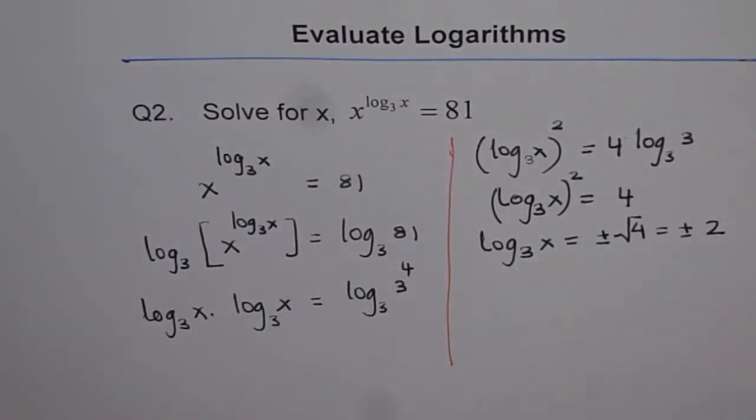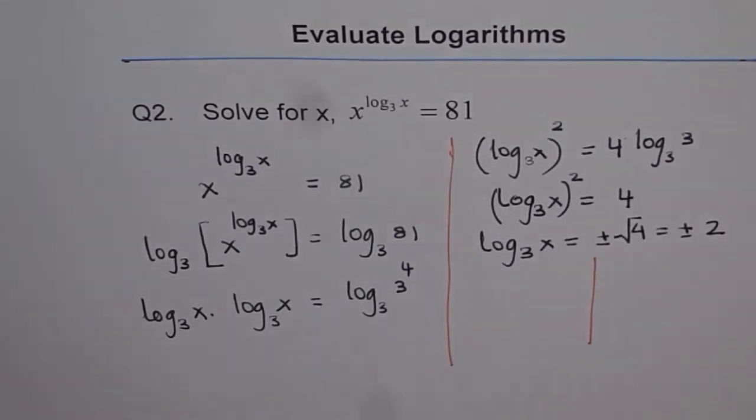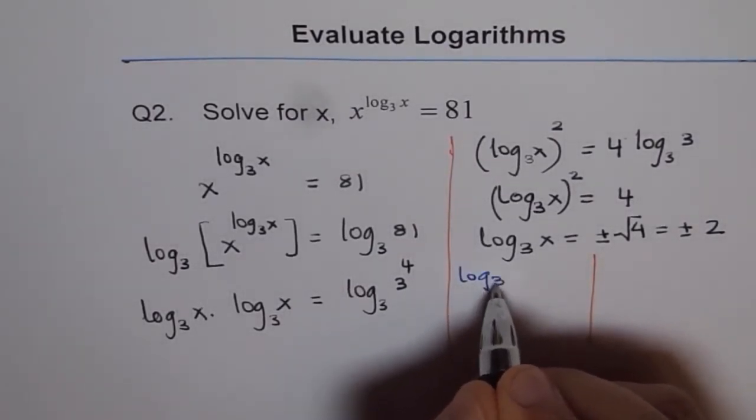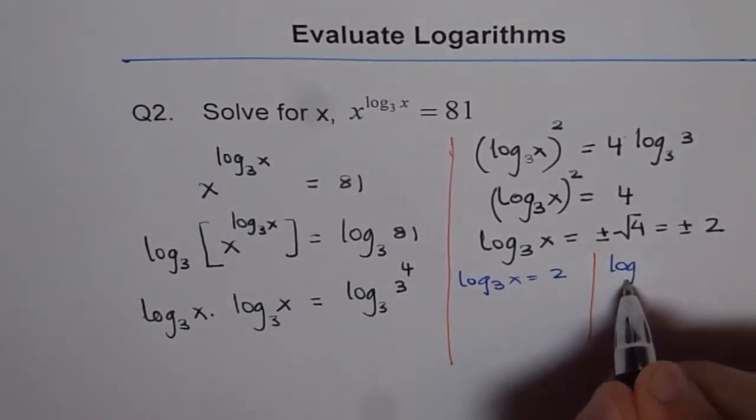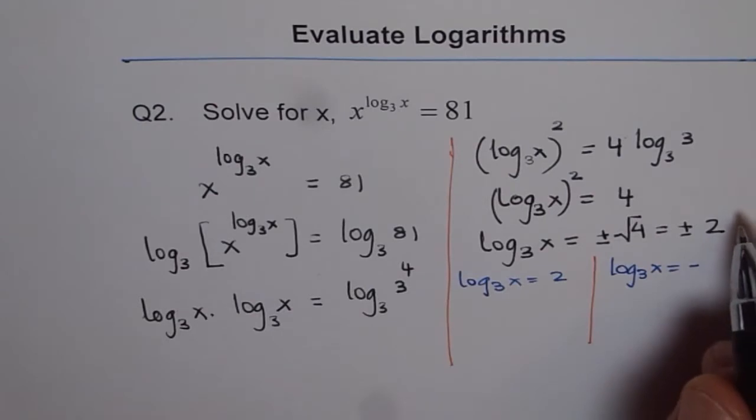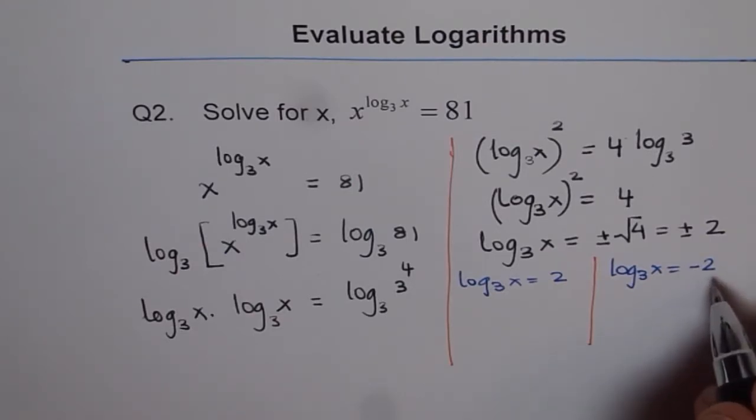So, we have two solutions here. One is, let me do it in a different way. So, one is log base 3 of x equals to 2. And the other one is log base 3 of x equals to minus 2.